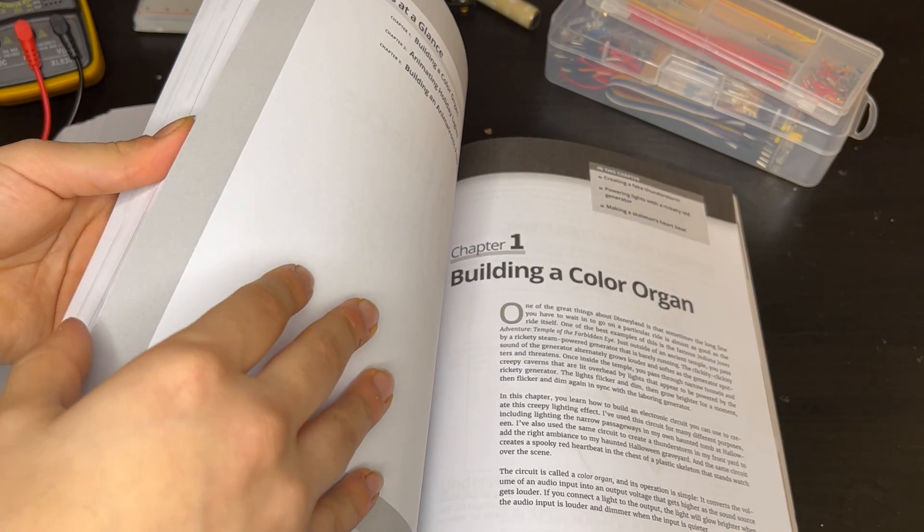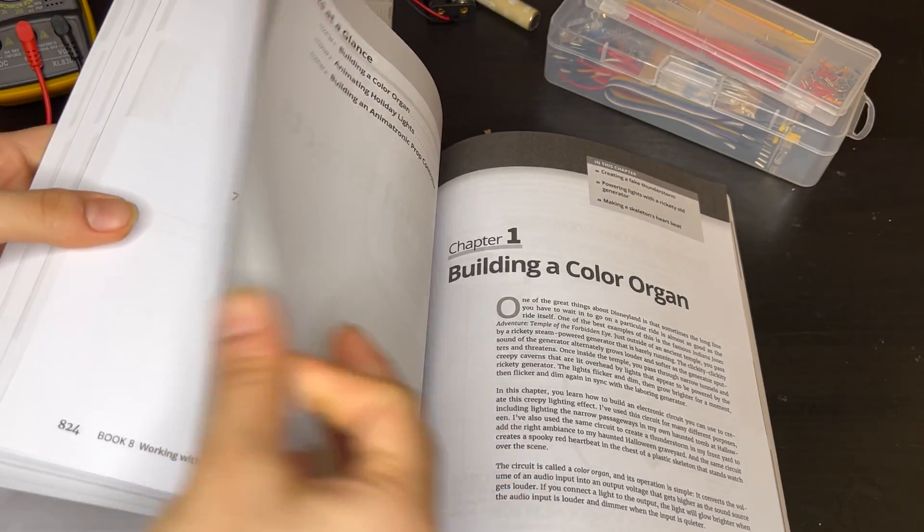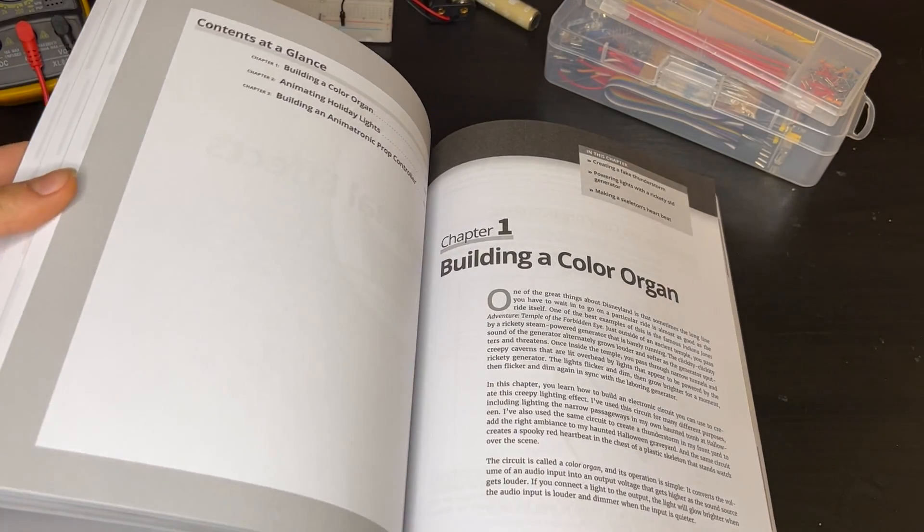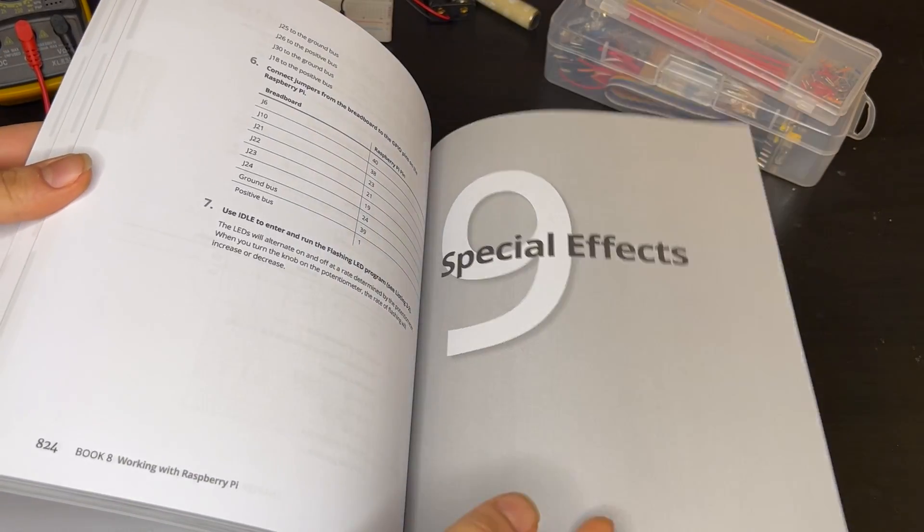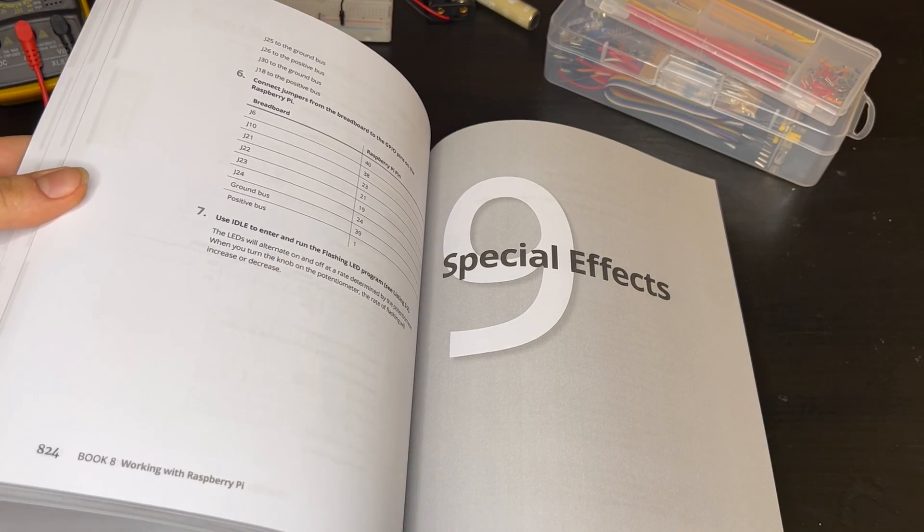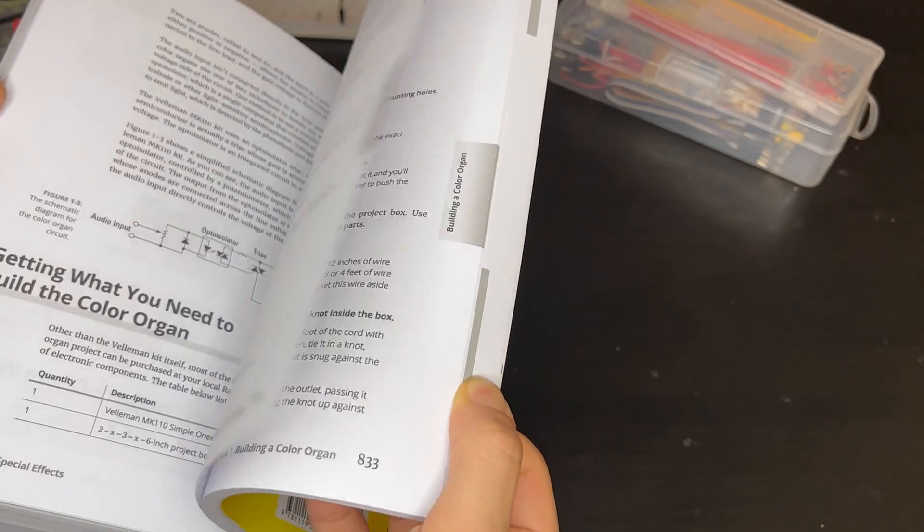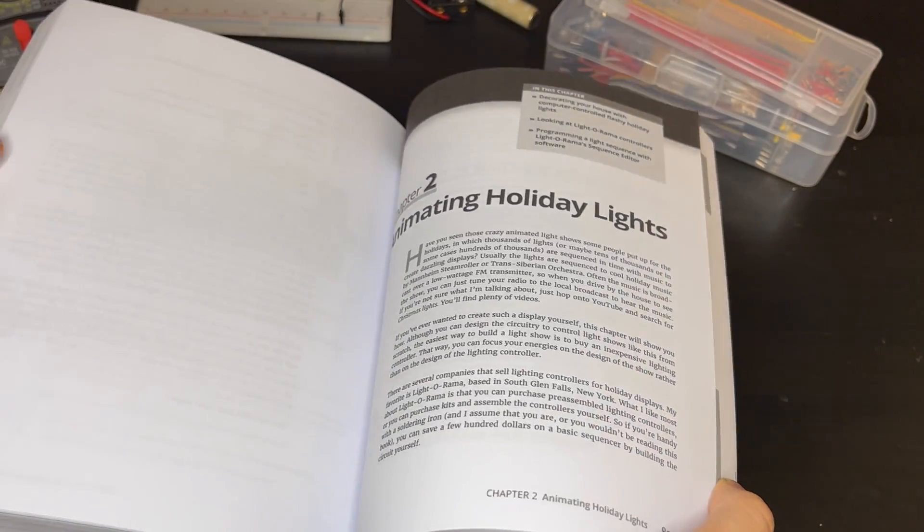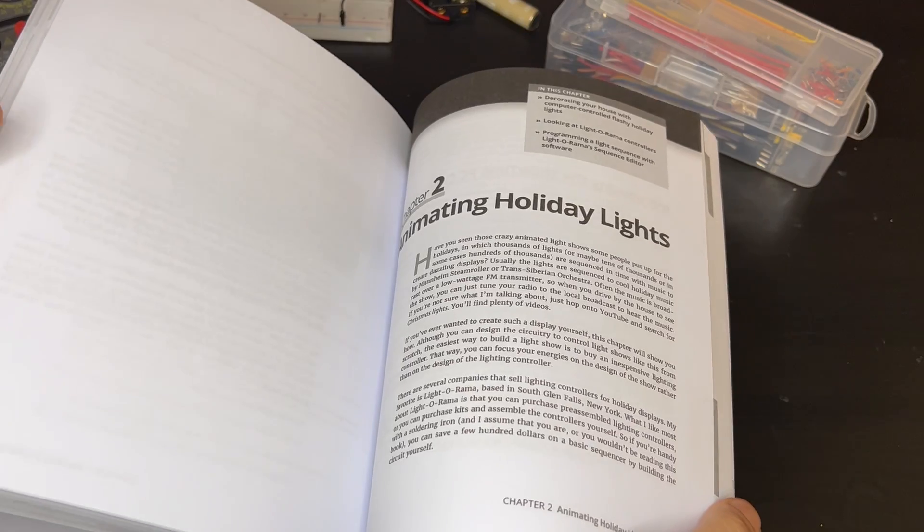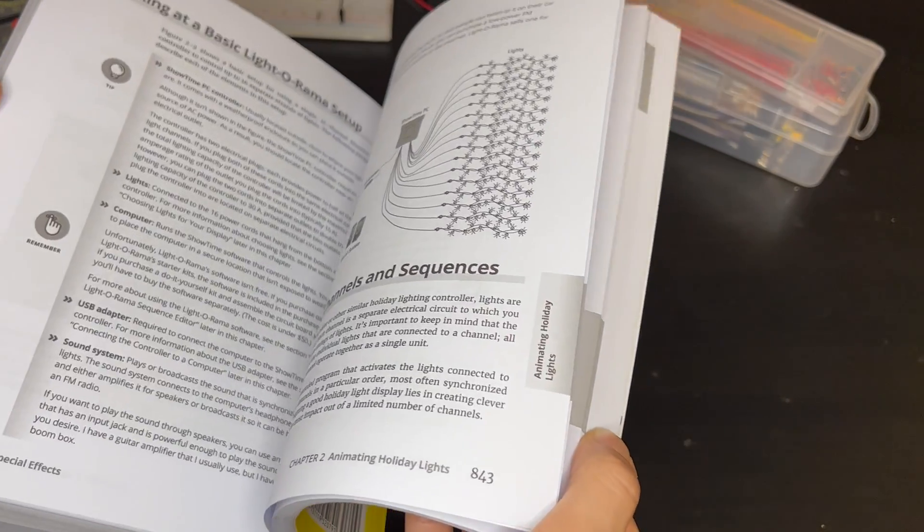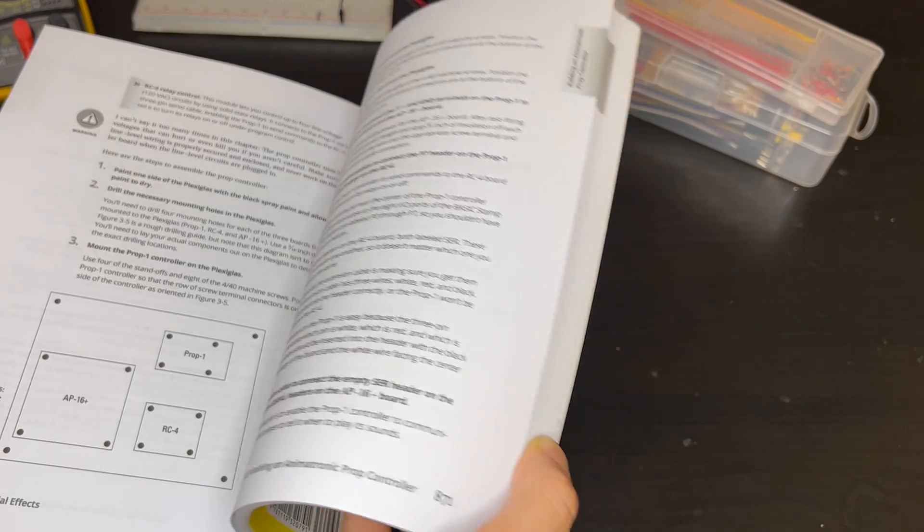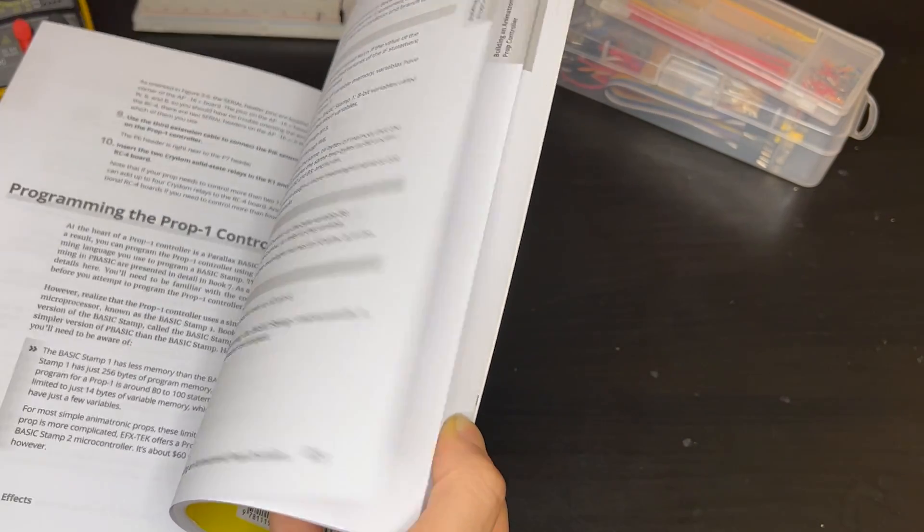The final book is Special Effects. In this book, you use your previous knowledge to do larger projects. You'll sometimes need the microprocessors from Books Six, Seven, and Eight. You use your previous knowledge for bigger projects, with detailed instructions on how to build them.